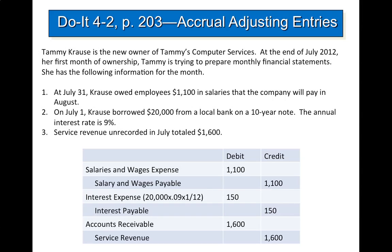The second example: on July 1, Kraus borrowed $20,000 from a local bank on a 10-year note with an annual interest rate of 9%. Calculating: $20,000 times 9% times 1/12 gives you $150. You'll debit interest expense and credit interest payable for $150. The last item: service revenue unrecorded in July totaled $1,600. So we debit accounts receivable $1,600 and credit service revenue $1,600.